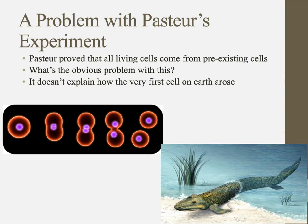Pasteur's experiments were revolutionary, proving that all living cells come from pre-existing cells, which was remarkable for his time. However, the problem is that it doesn't explain how we get back to that very first cell. So where did the very first cell on Earth come from? That's something Pasteur couldn't really explain at the time.